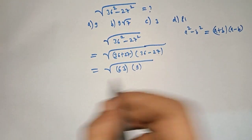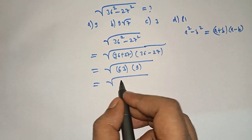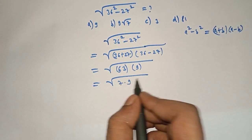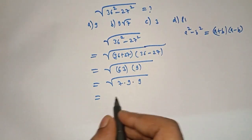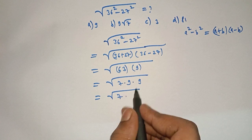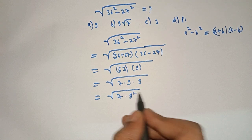Which is equal to... 63 can be written as 7 into 9 into 9, which is equal to under root of 7 into 9 raise to 2.